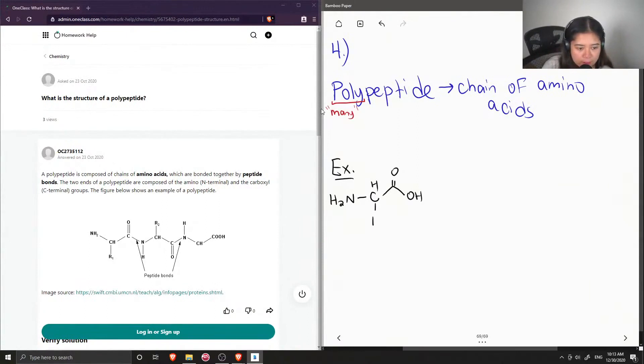So I'll denote this as R. So this reacts with a different amino acid, or it could be the same, but again it will also contain an amine group. It will contain a different R group, so I'll name it R prime, and it still contains a carboxylic acid.